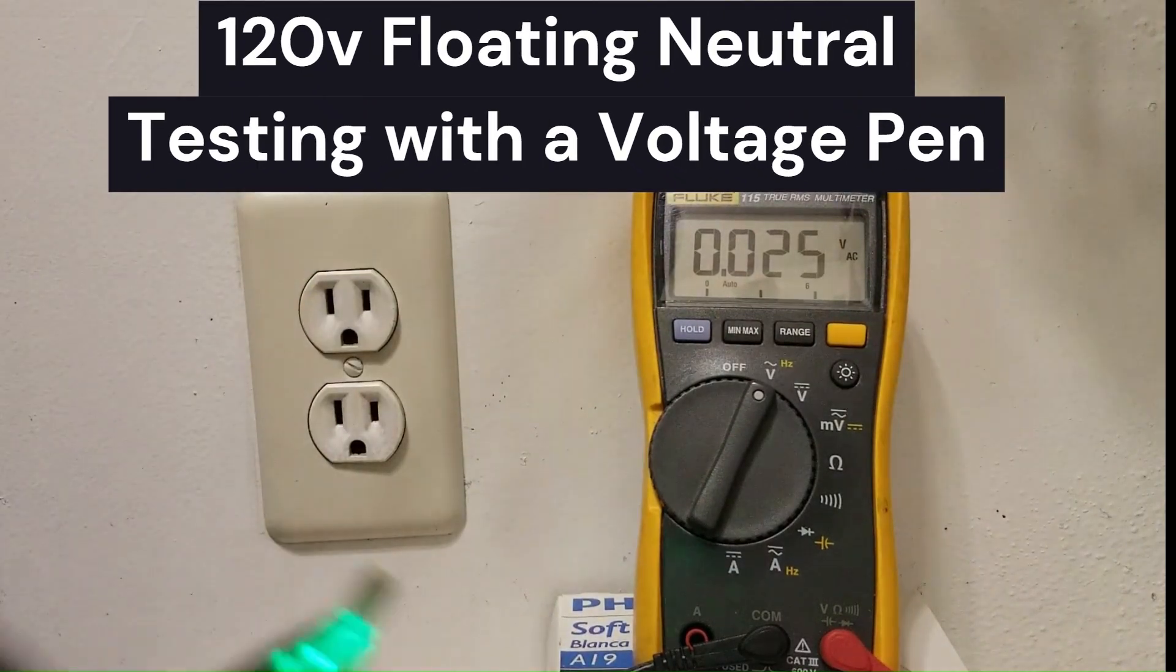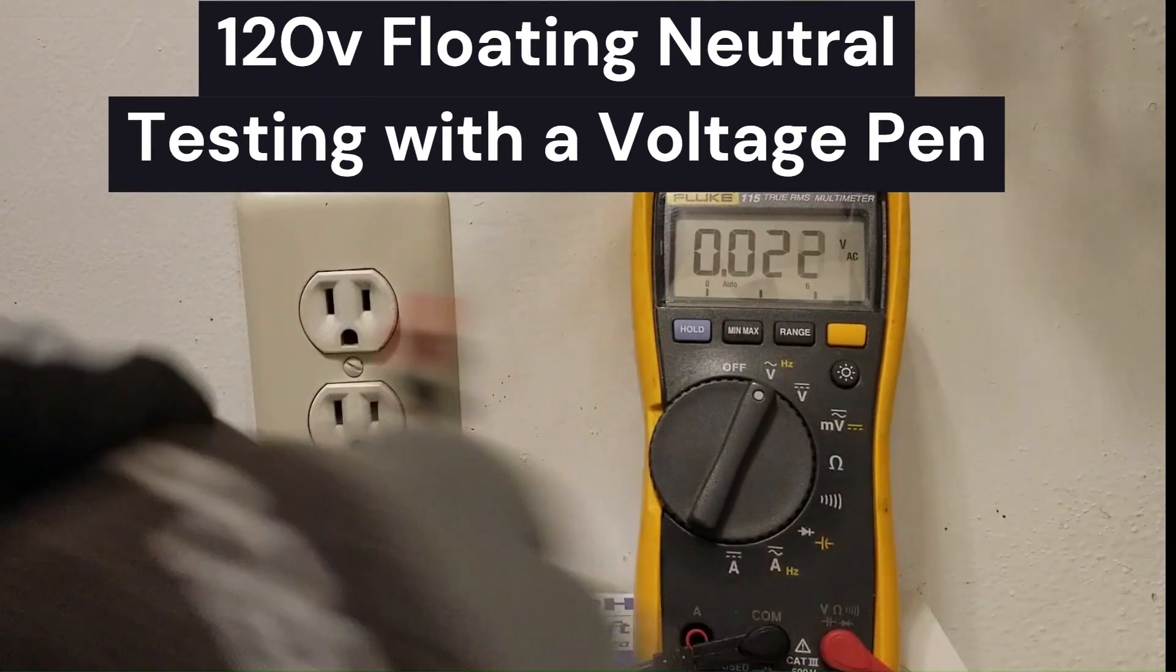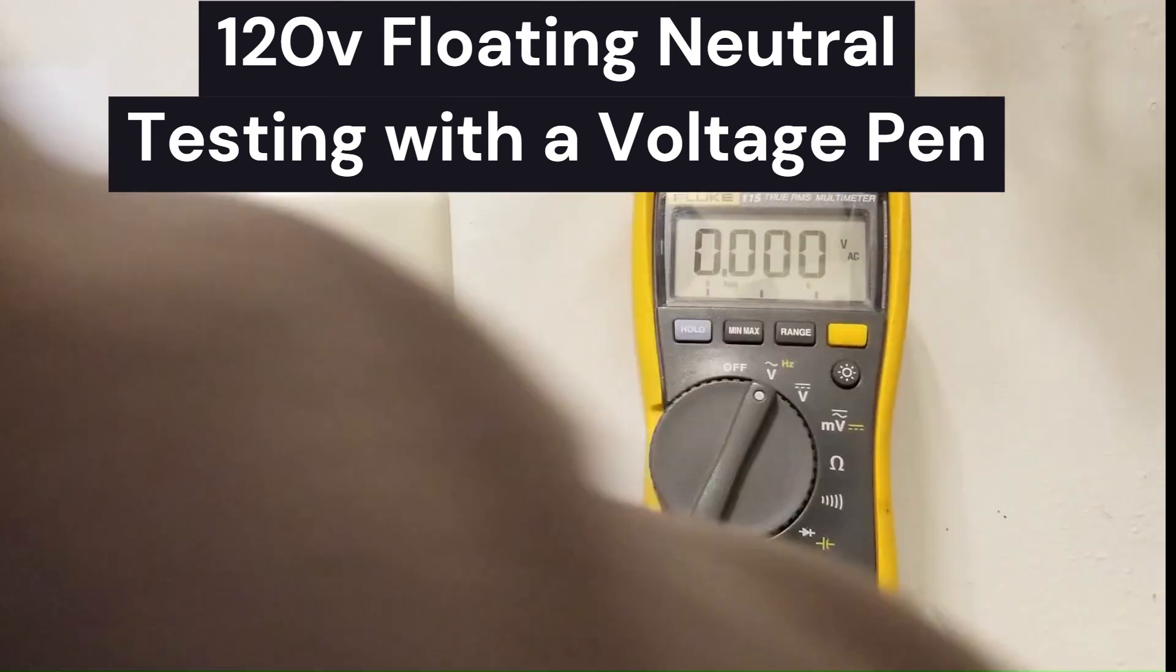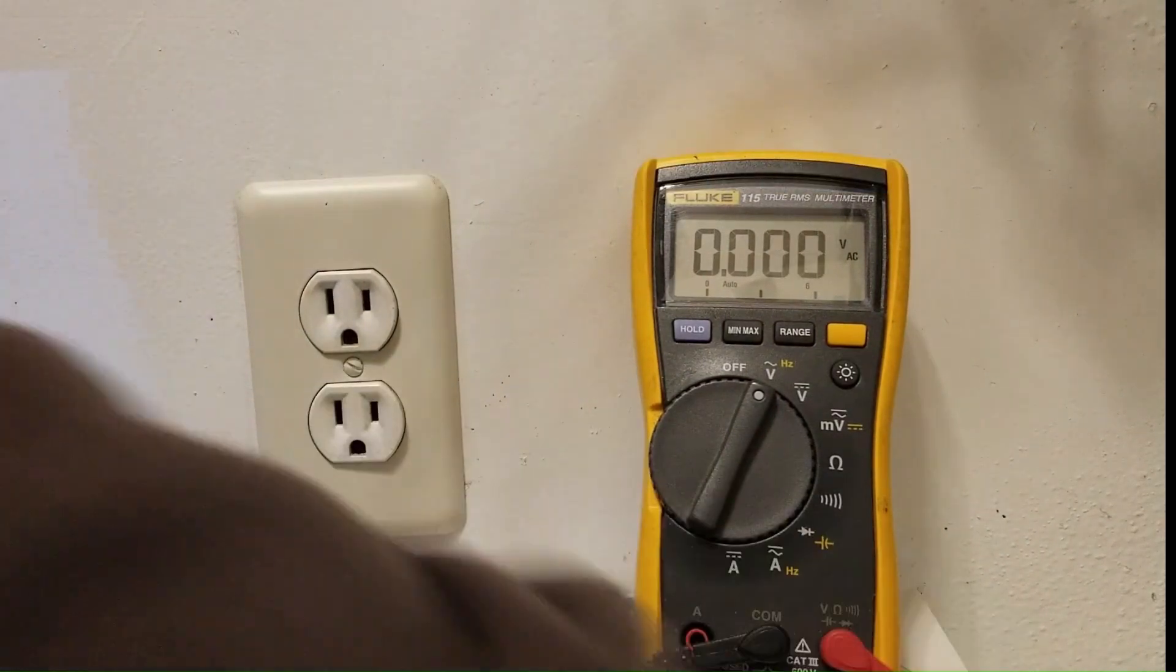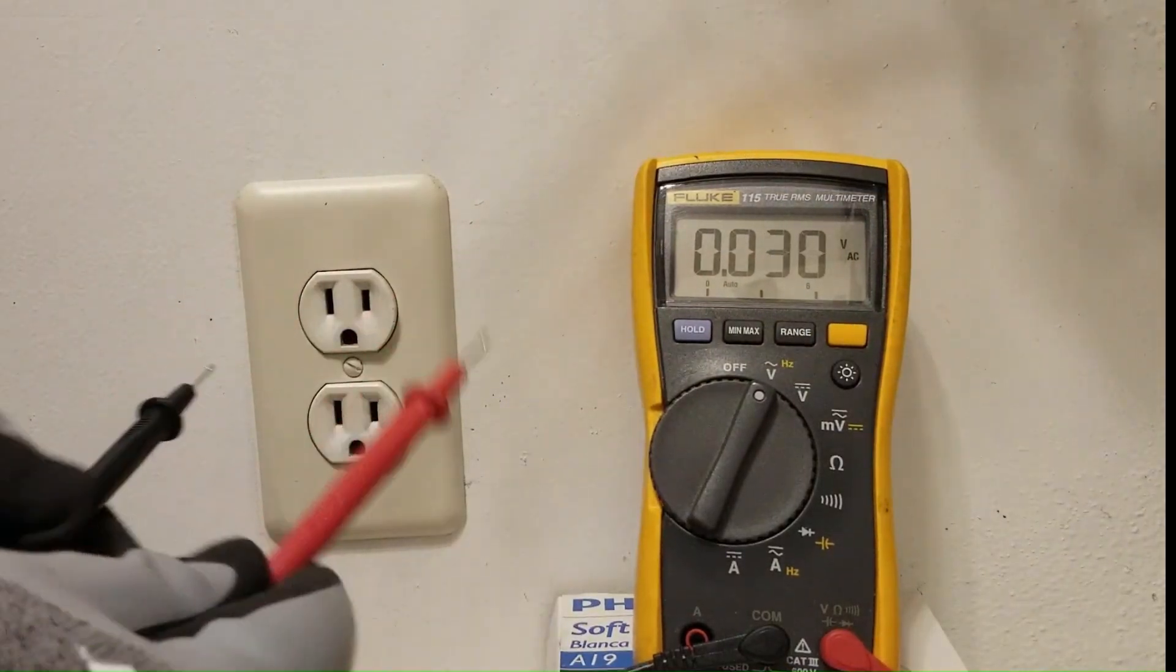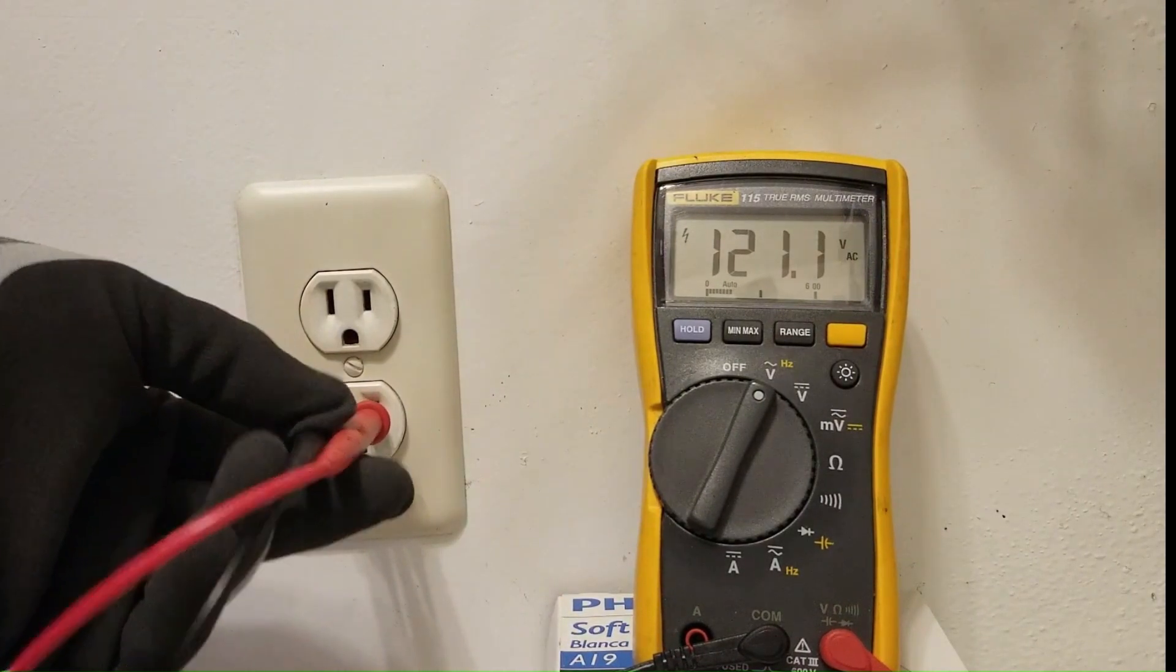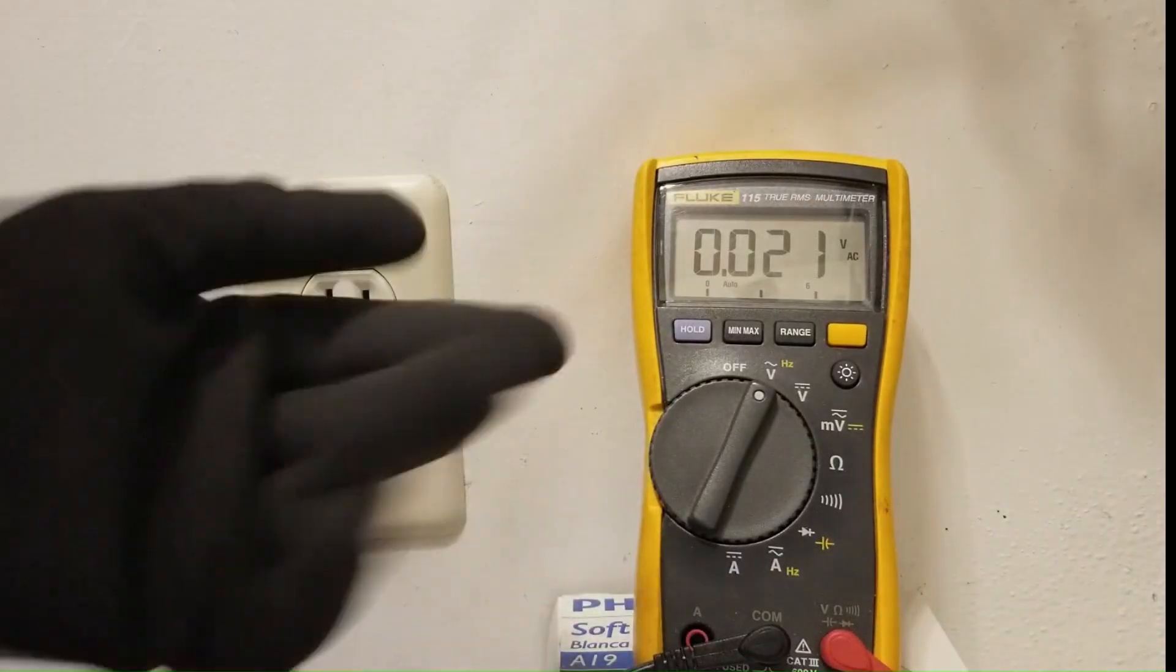For this particular case we have an outlet that tests fine with a voltage tester. Tests good. And if I use this voltmeter here it tells us we have 121 volts which you would think would indicate a good outlet.